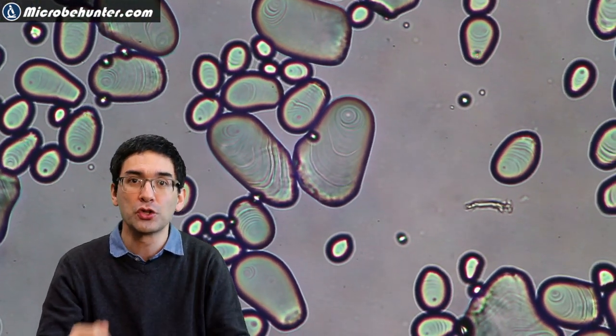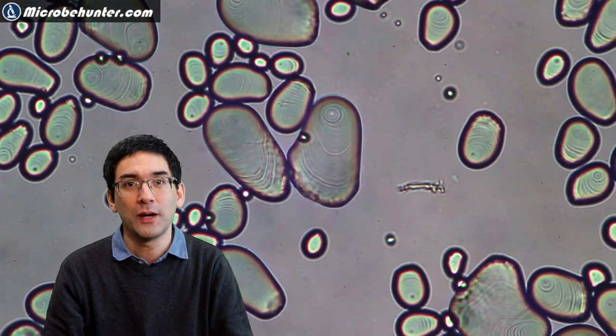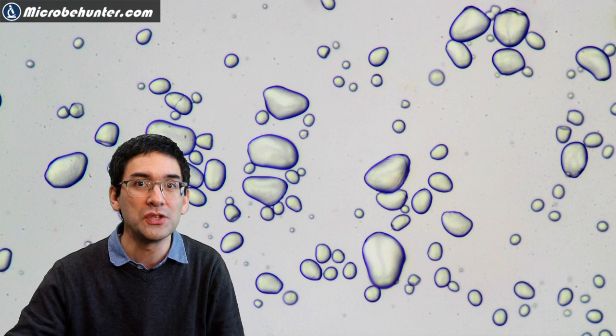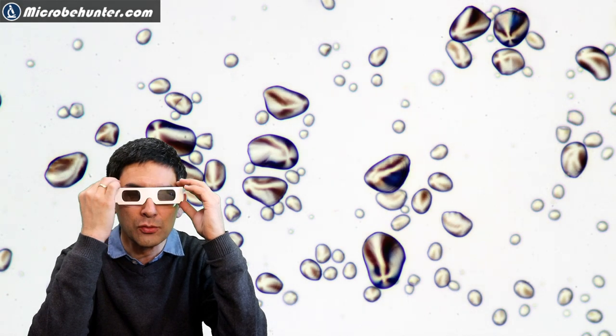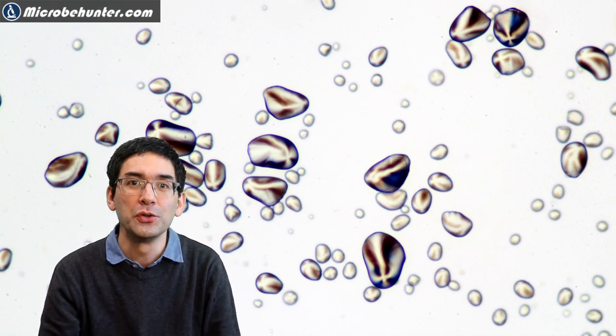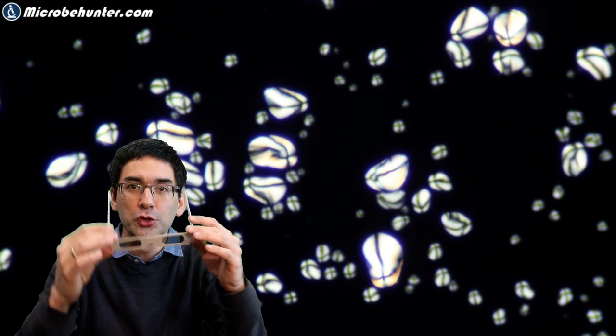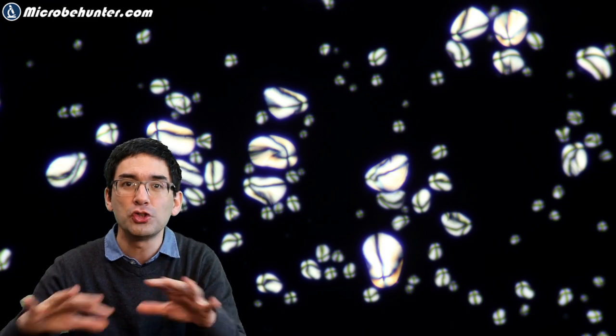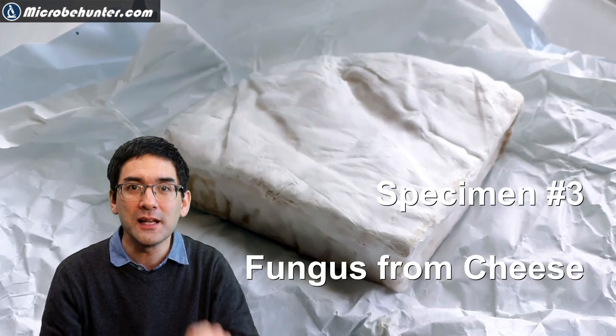Then under the microscope you can see those starch grains the potato plant uses as food storage. I tried brightfield, that's just the normal way, and then if you put on those polarizing filters under the microscope, then those starch grains really start to light up very beautifully. When you rotate those polarizing filters, this also changes the color a little bit.